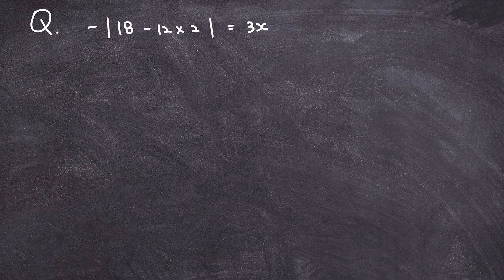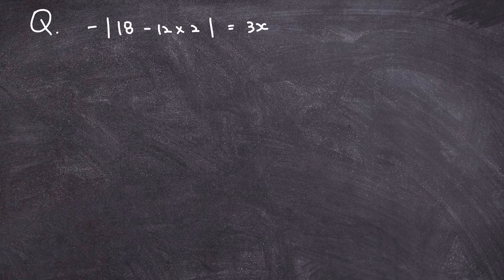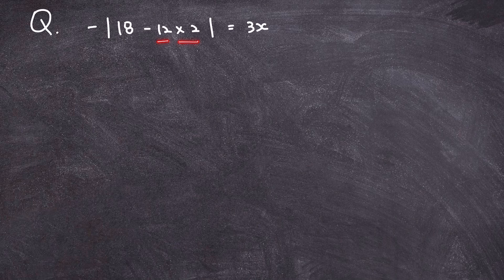So, I have negative absolute value of 18 minus 12 times 2 is equal to 3x, so before doing anything, I'm going to solve the operation that's within this absolute value sign first.